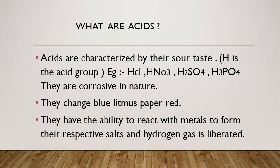The next characteristic of an acid is they have the ability to react with metals to form their respective salts, and along with the salts, hydrogen gas is liberated. For example, zinc, which is a metal, when it reacts with concentrated hydrochloric acid, it forms zinc chloride, which is a salt of zinc, and hydrogen gas will be released.